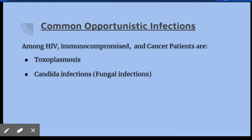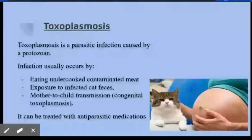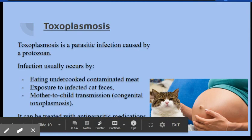Common opportunistic infections are toxoplasmosis and candida infections. Toxoplasmosis is caused by a parasite that is usually found in cats, and it can be transmitted to humans through infected cat feces, eating undercooked contaminated meat, or mother-to-child transmission — in which case it is known as congenital toxoplasmosis. It can be treated using antiparasitic medications.